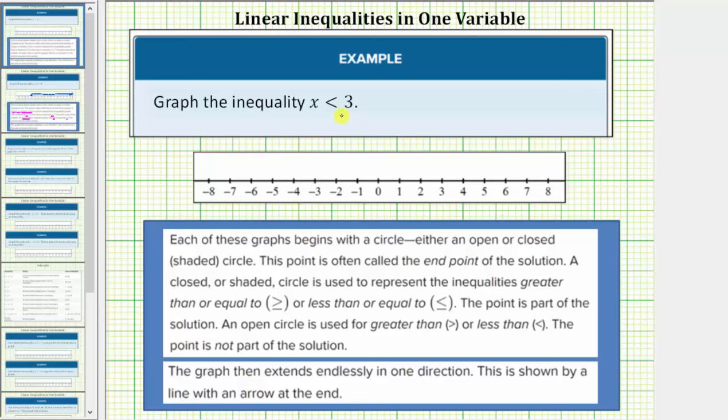Now we'll look at two examples of graphing basic linear inequalities in one variable. We first want to graph the inequality x less than 3, which means we want to graph all the real numbers on the number line that are less than 3.